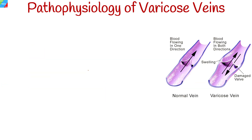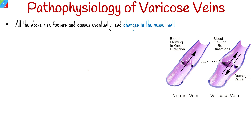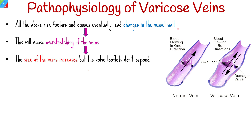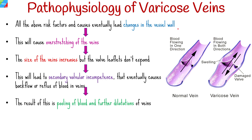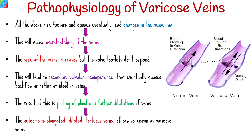All of the above risk factors and causes eventually lead to changes in the vessel wall, causing overstretching of the veins. The size of the veins increases but the valve leaflets don't expand. This leads to secondary valvular incompetence that eventually causes backflow or reflux of blood in veins. The result is pooling of blood and further dilatation of veins, producing elongated, dilated, tortuous veins — otherwise known as varicose veins.